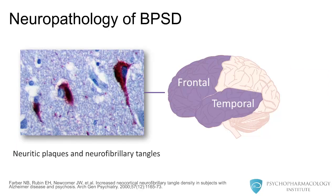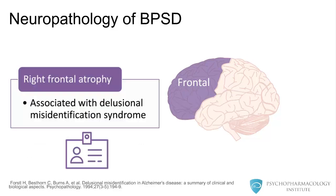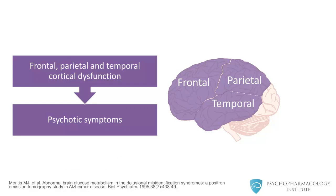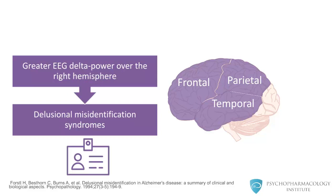Let's talk in more detail about some of the neurobiological changes seen in individuals with dementia. The presence of neuritic plaques and neurofibrillary tangles in the frontal and temporal cortices are associated with behavioral symptoms, especially apathy. Right frontal lobe atrophy is associated with delusional misidentification syndromes. Frontal-temporal-parietal cortical dysfunction is associated with psychotic symptoms in individuals with dementia.